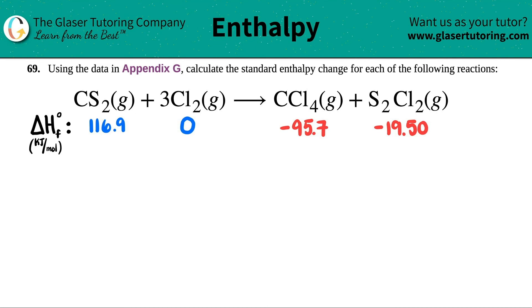Number 69. Using the data in Appendix G, calculate the standard enthalpy change for each of the following reactions. So it's CS2 gas plus 3Cl2 gas yield CCl4 gas plus S2Cl2 gas.